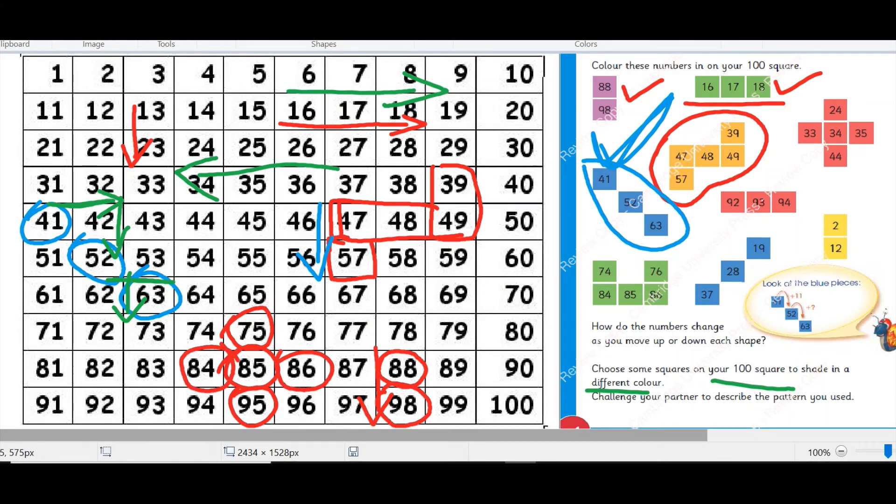So how will you describe it? You will say that when we move up we decrease 10 from the number, 85 minus 10 would be 75. When we go down it is increasing 10. When we go to right side it is increasing 1. When we go to left side it is decreasing 1 number.